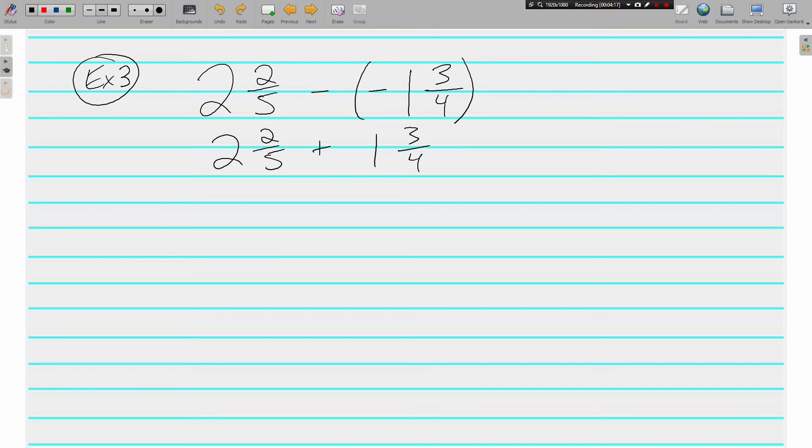Now when we're adding, I like to just do the whole numbers. Take the 2 plus the 1, and I'll just put it over here. The 2 plus 1 is 3, and now I'll just worry about the fraction part. Your other option is you could make both of these improper fractions and do it that way. If I did that, 5 times 2 plus 2 would give me 12 fifths, and 4 times 1 plus 3 gives me 7 fourths.